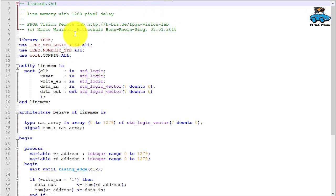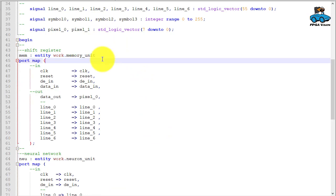Here is the line memory. This is something we had also in the previous design. So we have an array with 1280 pixels of 8-bit.